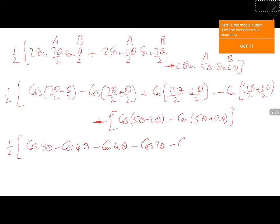Minus into minus plus cos 7 theta you can see 7 theta cancels 3 theta cancels 4 theta cancels answer is zero.